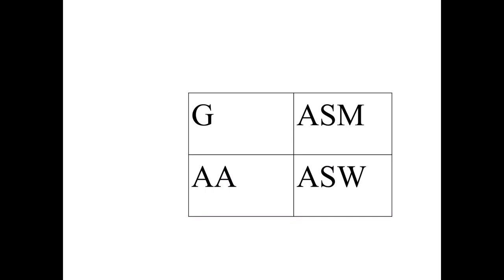Individual counters — the pieces representing military units — have four values. AA is the value used against aircraft. G indicates values used against ground targets. ASM is anti-ship missiles, values used against ships. ASW is anti-submarine warfare, values used against submarines. A value can range from nothing up to nine, and in this simulation we use a randomized value of one to ten, using a random function on a calculator or a ten-sided die.